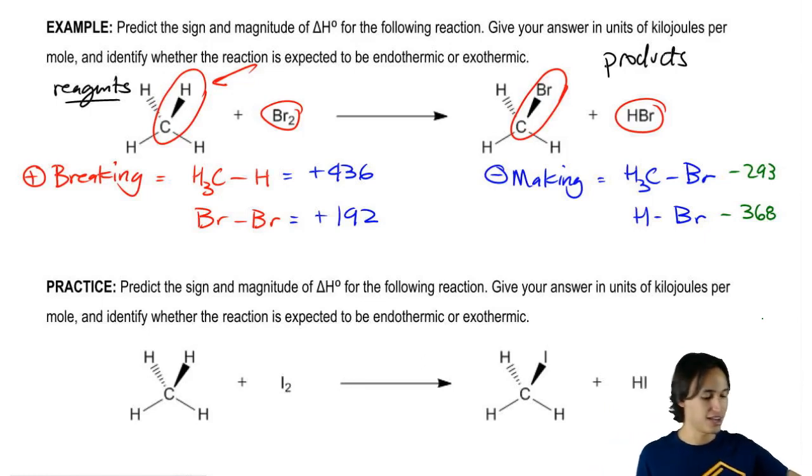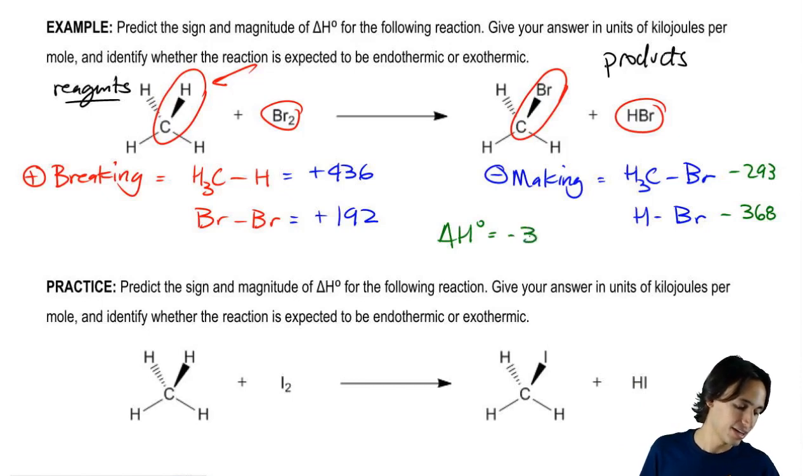And what that should give you at the end is that your enthalpy, your delta H, is equal to negative 33 kilojoules per mole.